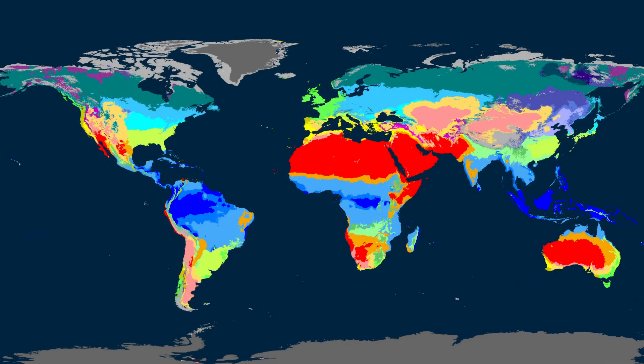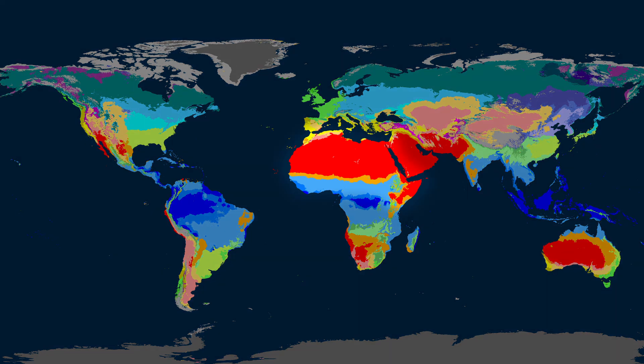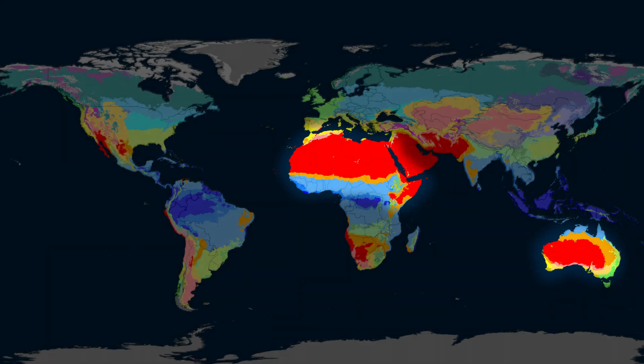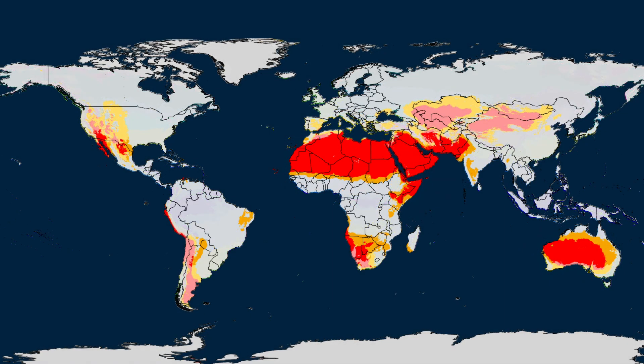Obviously, there are a lot more colors on our new map, and I still haven't given you a key. But if you look at some of our favorite locations, you may see similar shapes. Let's look back at North Africa and the Australian Outback. The population density map shows that these regions are sparsely populated. And the climate map shows these regions in bright red. In fact, check out what happens when I show only the red places on the map.